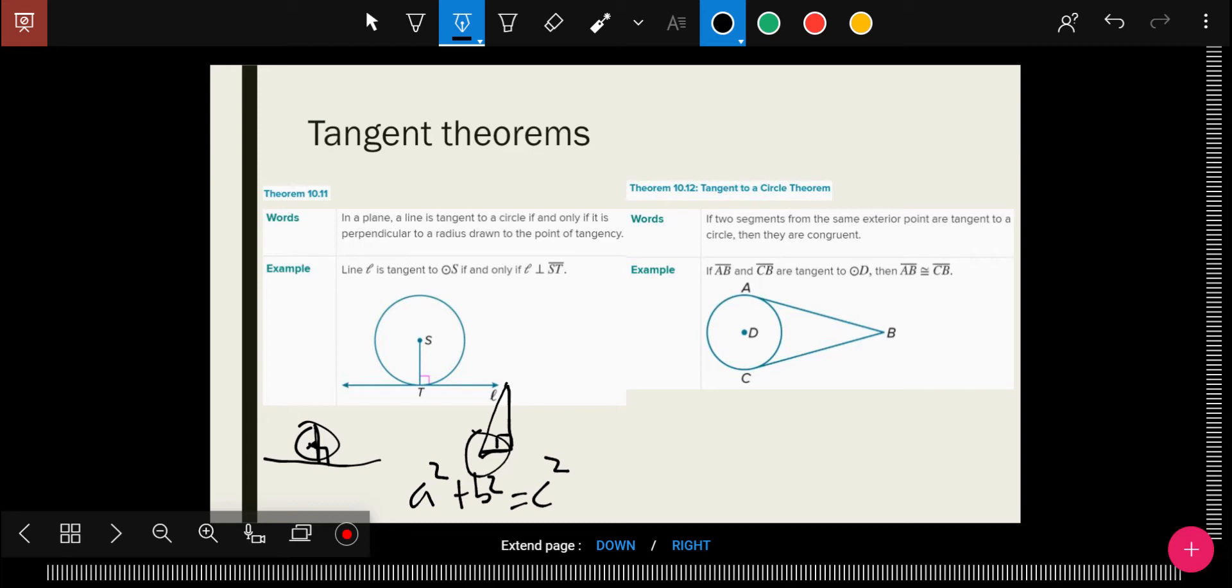The one that writes simpler, it says over here, if two segments from the same exterior point are tangent to the circle, then they are congruent. So they go from the same point to the same circle, the same point tangent to the same circle, they are congruent to each other. So AB is congruent to BC. Much simpler. If you think of like, you want to be standing equidistant from some place, you're standing in a point that is tangent to both places you're trying to be equidistant from.